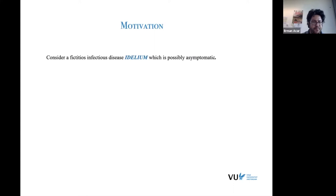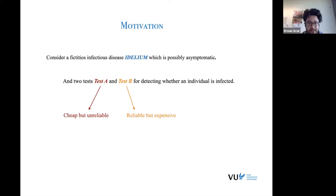So consider a fictitious infectious disease idalium, which is probably asymptomatic that you might not know that you might have it, just like COVID nowadays. It's not a nice example. Well, there can be two tests, test A and test B, for detecting whether an individual is infected or not. And test A might be cheap but unreliable. On the other hand, test B can be reliable but expensive. So what would you do? What would you take? Which test would you take?